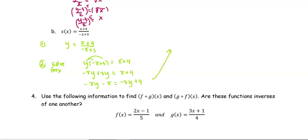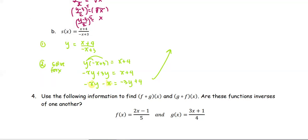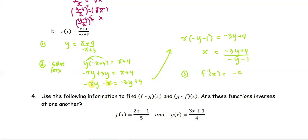Continuing, we have the common factor x. We factor x out to get x times negative y minus 1 equals negative 3y plus 4. To solve for x, we divide both sides by negative y minus 1, so x equals negative 3y plus 4 all divided by negative y minus 1. In step 3, we replace x with the inverse notation and y with x. And we are done.